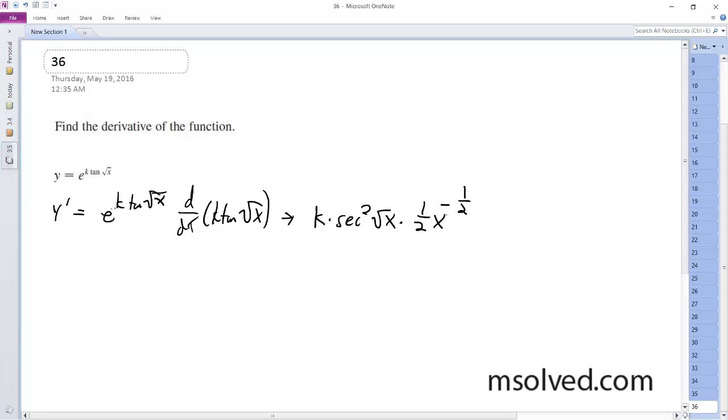Because that's the derivative of what's on the inside there. k is a constant in this case. So ultimately what we end up with is k times the secant squared of x raised to the one half over 2 times x raised to the one half, times what we had previously: e raised to k times the tangent of the square root of x, or x to the one half. And that's it.